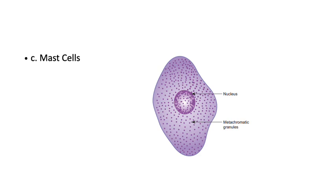Mast cells are found along small blood vessels. They have granules that contain histamine, which is a vasodilator, and heparin, which is an anticoagulant. These cells look like blood basophils. The cytoplasm is packed with granules.